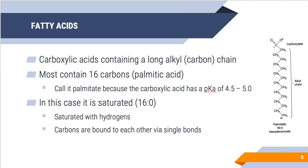An introduction to lipids: fatty acids are basically composed of a carboxylic acid as well as an alkyl carbon chain. Most are typically 16 carbons — we call this palmitic acid — but in fat metabolism we refer to it as palmitate because the carboxylic acid group is a fairly weak acid with a pKa of 4.5 to 5.0. Palmitate is a saturated fatty acid, so it's a 16-carbon chain with zero double bonds. Every carbon is saturated with hydrogens, so each carbon has four bonds attached to it, all single bonds.